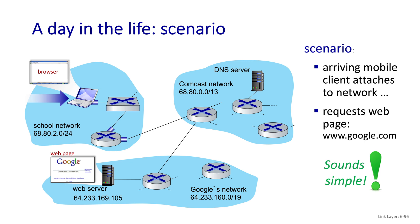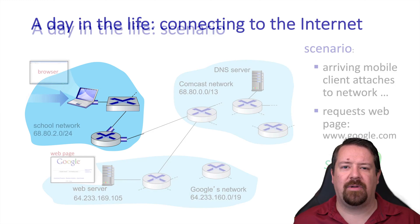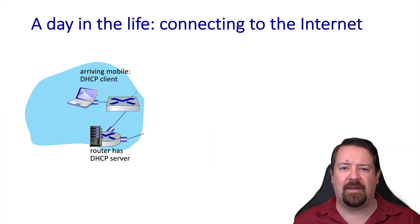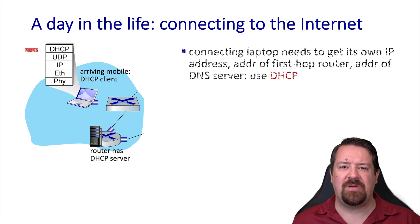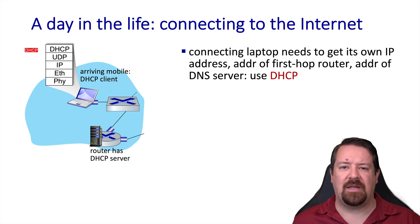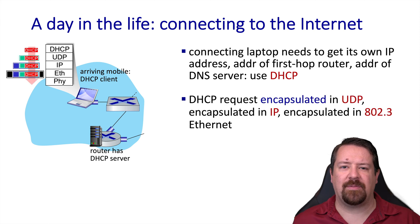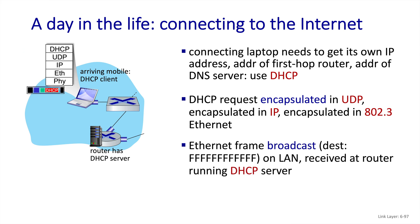But it's not quite that simple. Before the browser will be able to connect to anything, the device needs an address on the network that it just connected to. And like most campus networks, it will use DHCP to get the address. The DHCP client is an application running over UDP, so the request will be encapsulated in UDP, then in IP, and then in an Ethernet frame to be forwarded over the network. Remember the client doesn't know where the DHCP server is, so it will just broadcast this request.